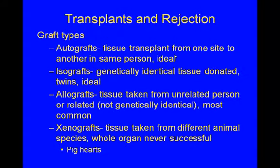Transplants and rejection: there are types of grafts. Autografts are tissue transplants from one site to another in the same person — this is ideal, no need to worry about tissue typing. Isografts are genetically identical tissue from twins — also ideal. Allograft is the most common, where tissue is taken from an unrelated person or related but not genetically identical. Xenografts are tissue taken from a different animal species, like cow and pig heart valves — on a smaller level that works, but whole organs have never been successful.